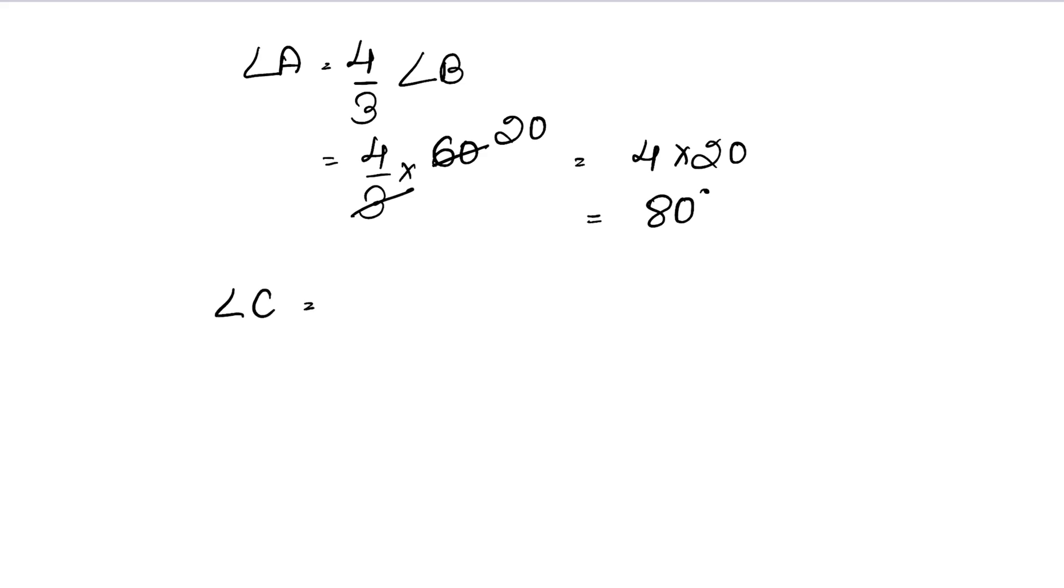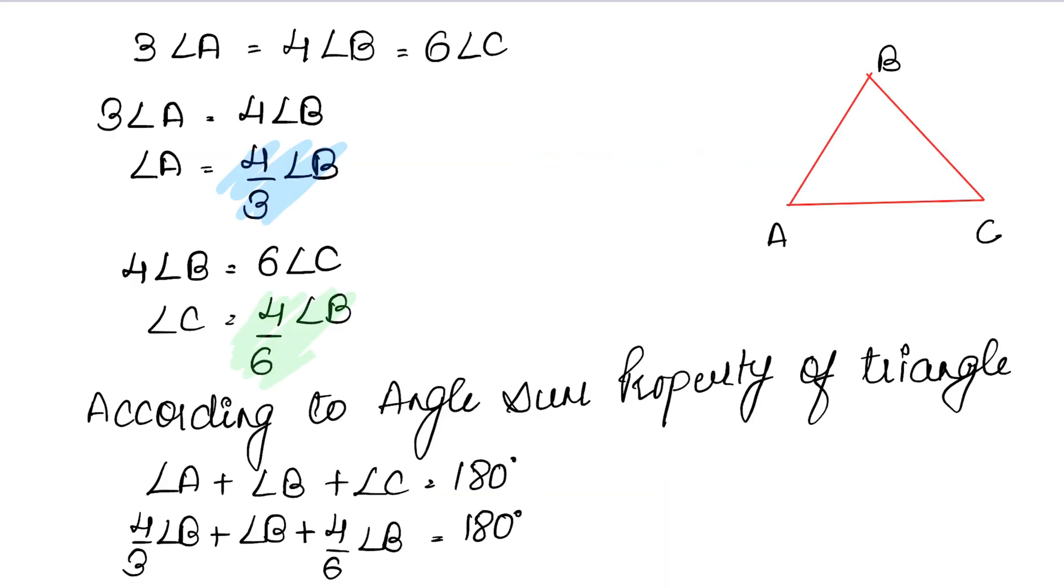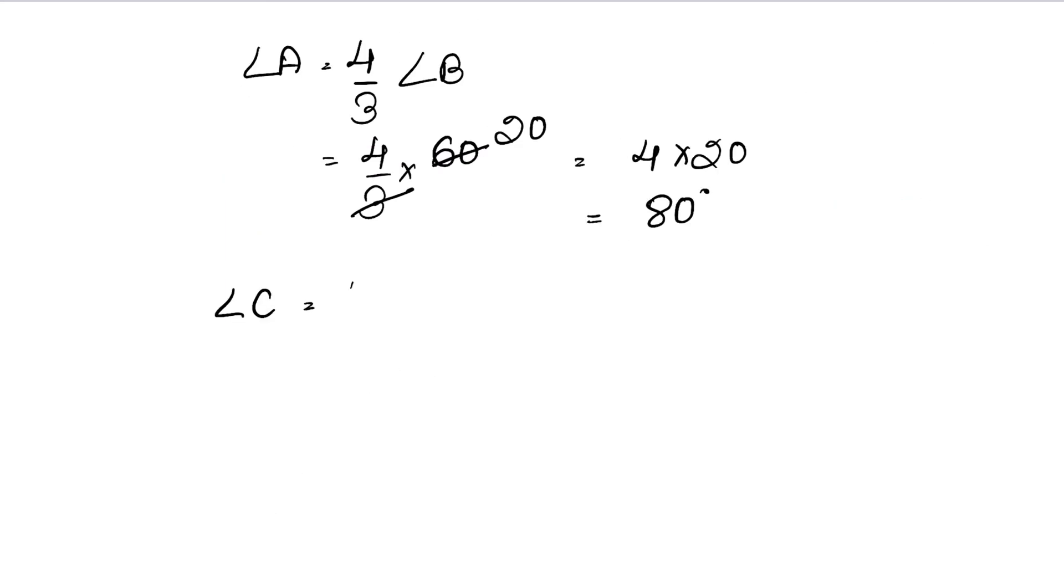Now how much is our angle C? 4 upon 6 of angle B. So angle B value is 60 degree. So 6 ones are 6, 6 tens are 60. So how much is it? 4 into 10, that is 40 degree. So we know that angle A is 80, angle B is 60, and angle C is 40 degree. This is the answer.